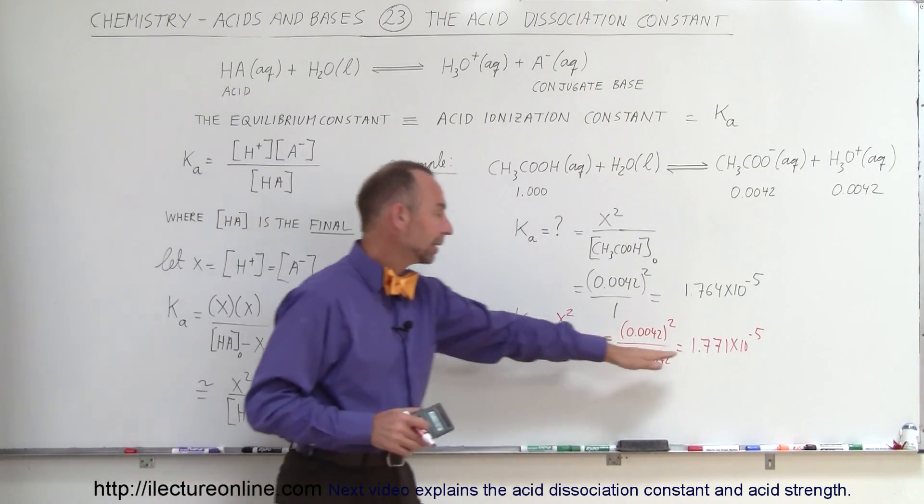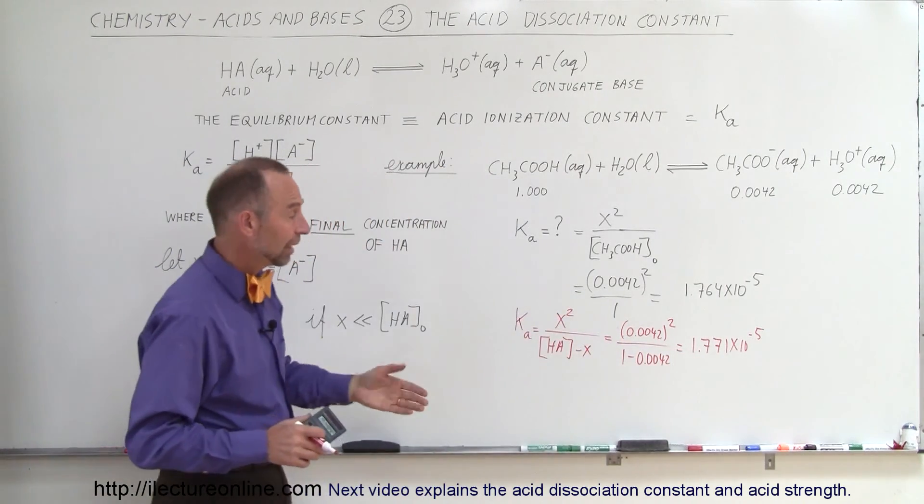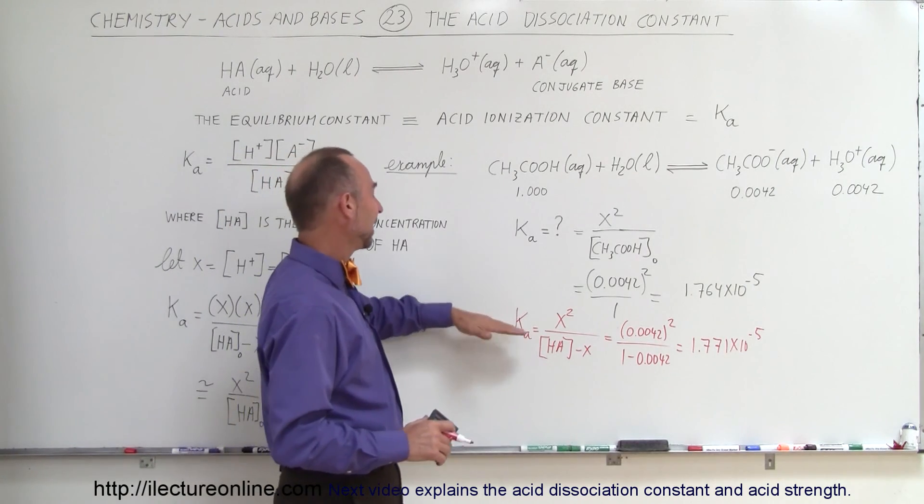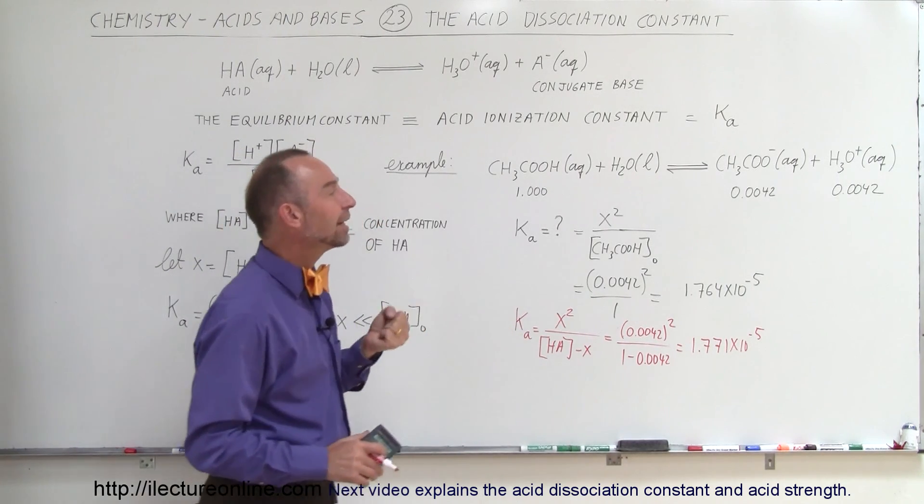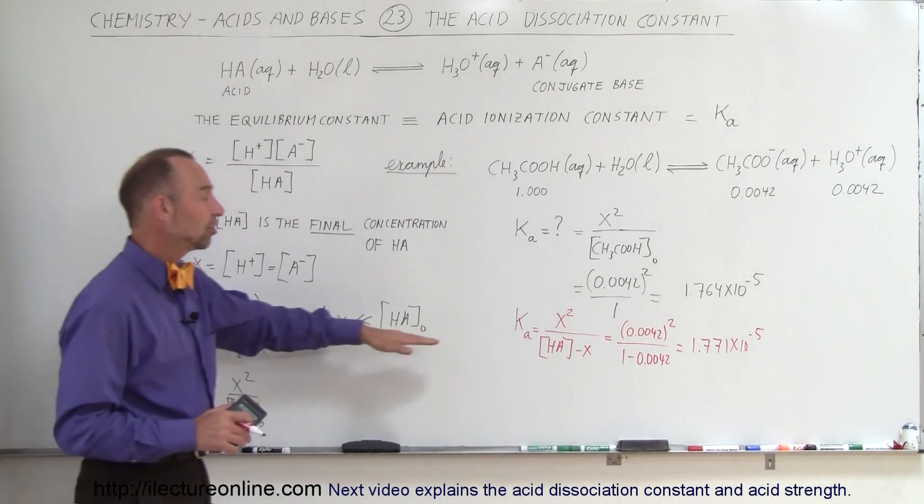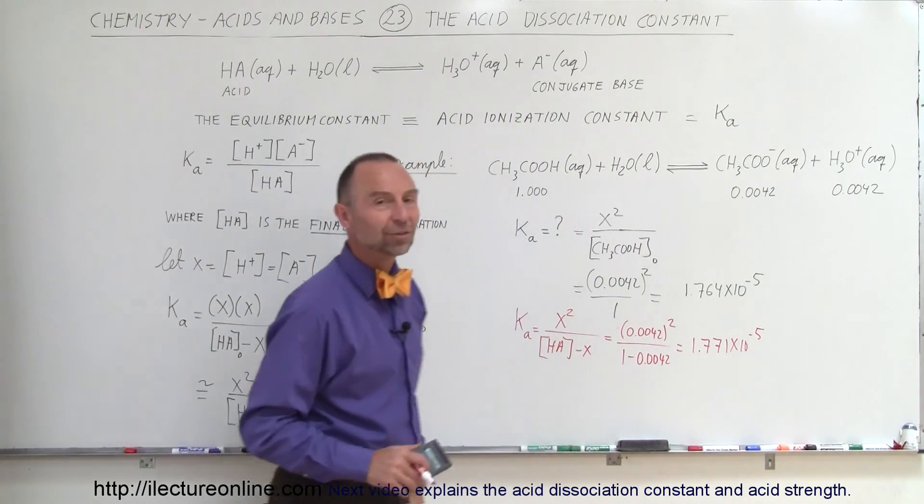If K is very small, then we're dealing with a very weak acid. If K is very large, then we're dealing with a strong acid. So you can see that Ka definitely does give you an indication of how strong or how weak the acid is when the dissociation is not complete when we have a reversible reaction.